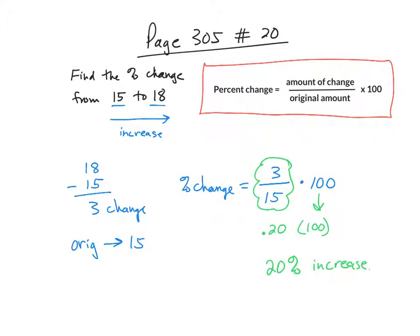Just remember that you always subtract to find your change. Take the larger number minus the smaller number, and then whichever number you started with, that's your original number that must go on the bottom, whether it's an increase or a decrease.